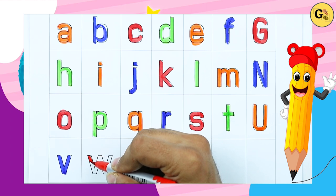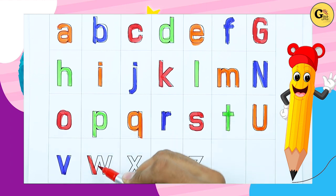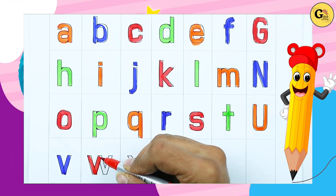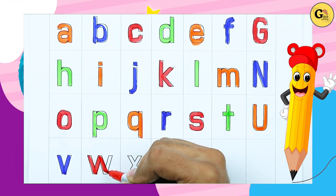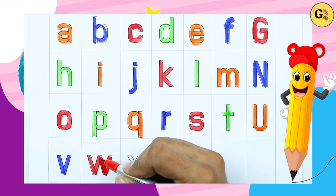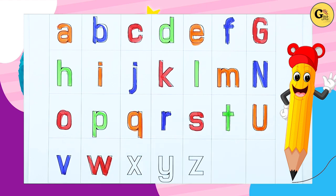W. Capital small W. With red color. W for watch.